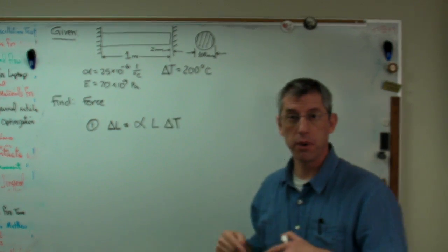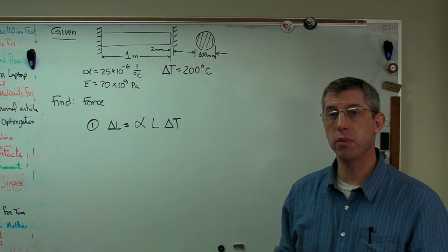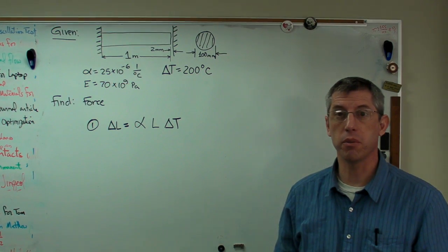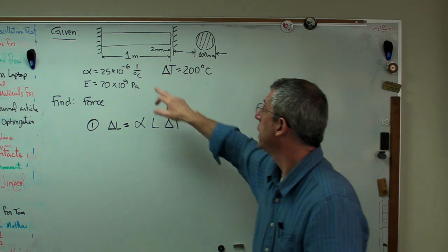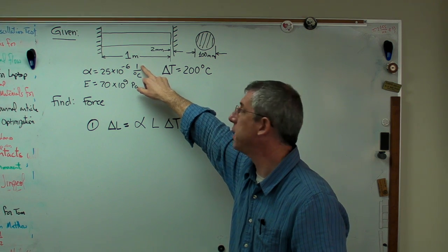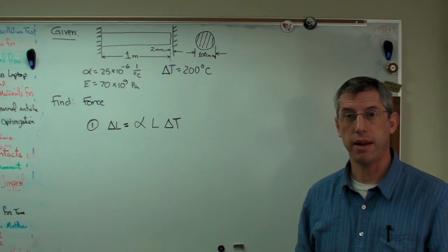Funny units here, one per degree C. It's actually strain per degree C. So this is really 25 microstrain per degree C. And strain is either in length over length or it's unitless, depending on how you want to write it down. So that's why you have that funny unit.